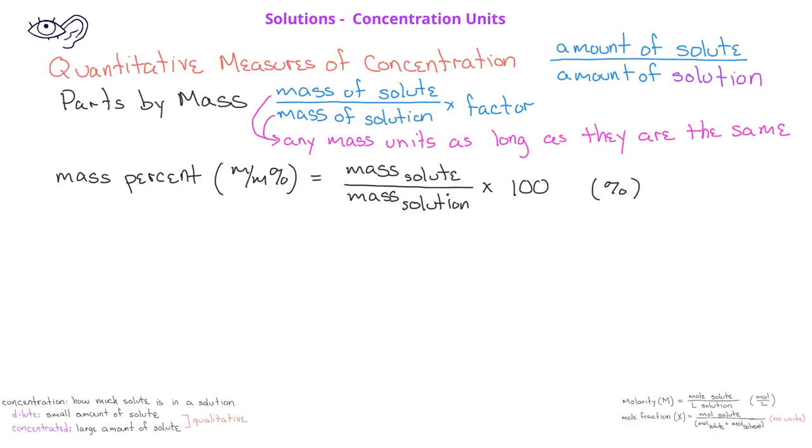Another kind of parts by mass measure is known as parts per million, sometimes represented as ppm. Again, we take the mass of the solute divided by the mass of the solution, but the multiplication factor now is one million. The units we use for ppm are simply ppm.